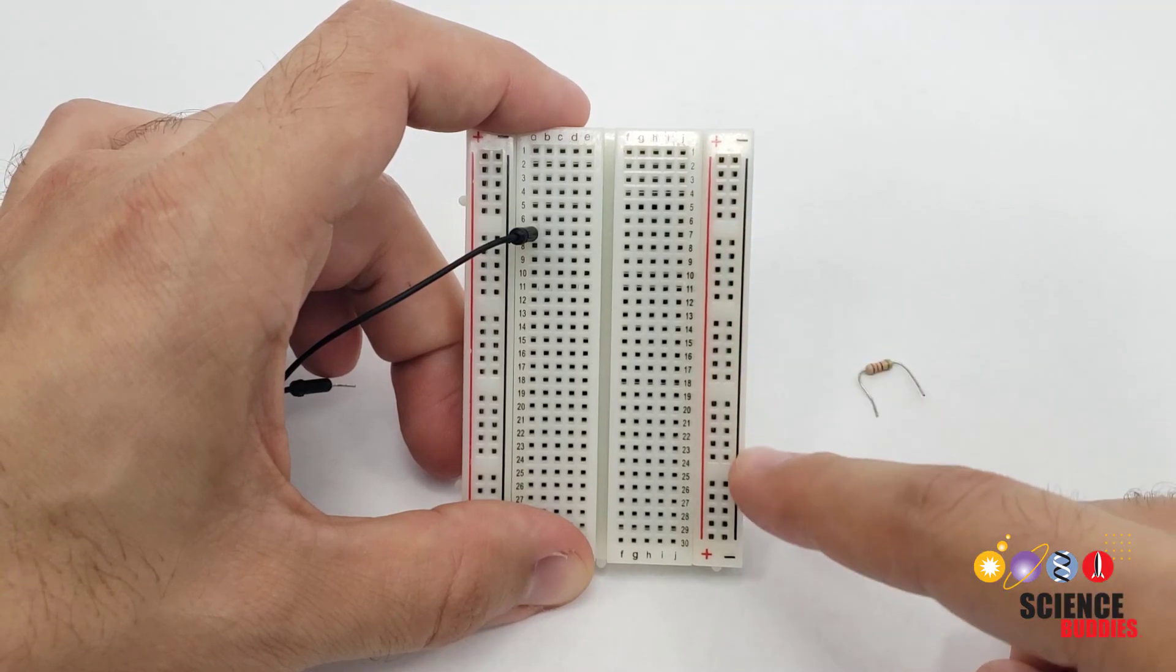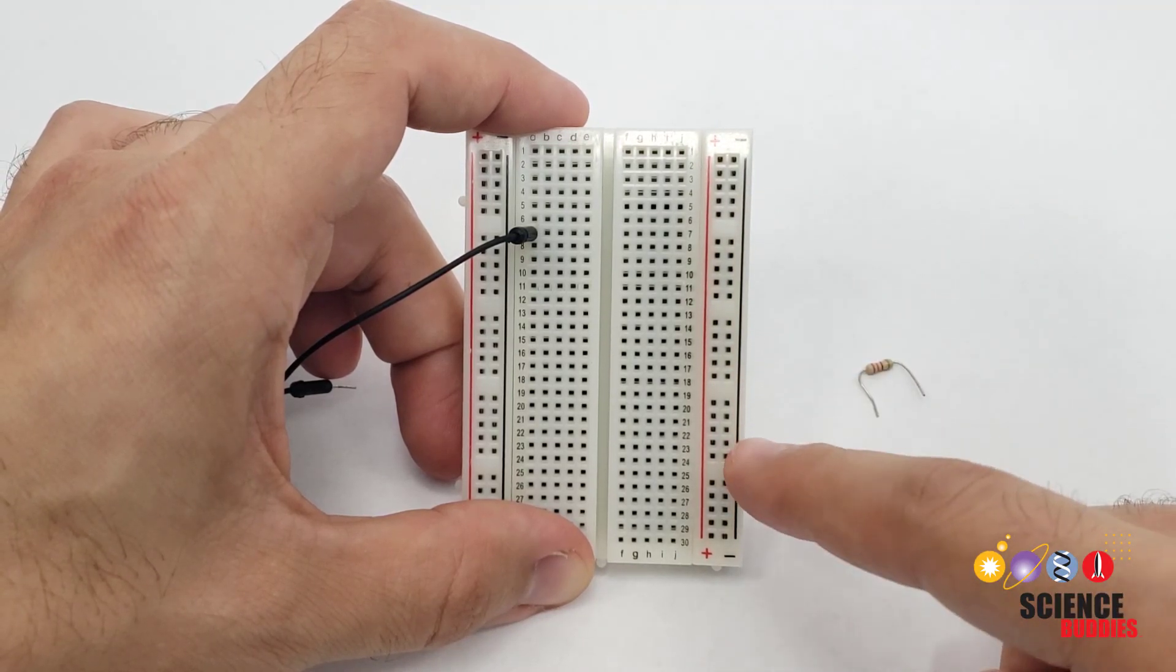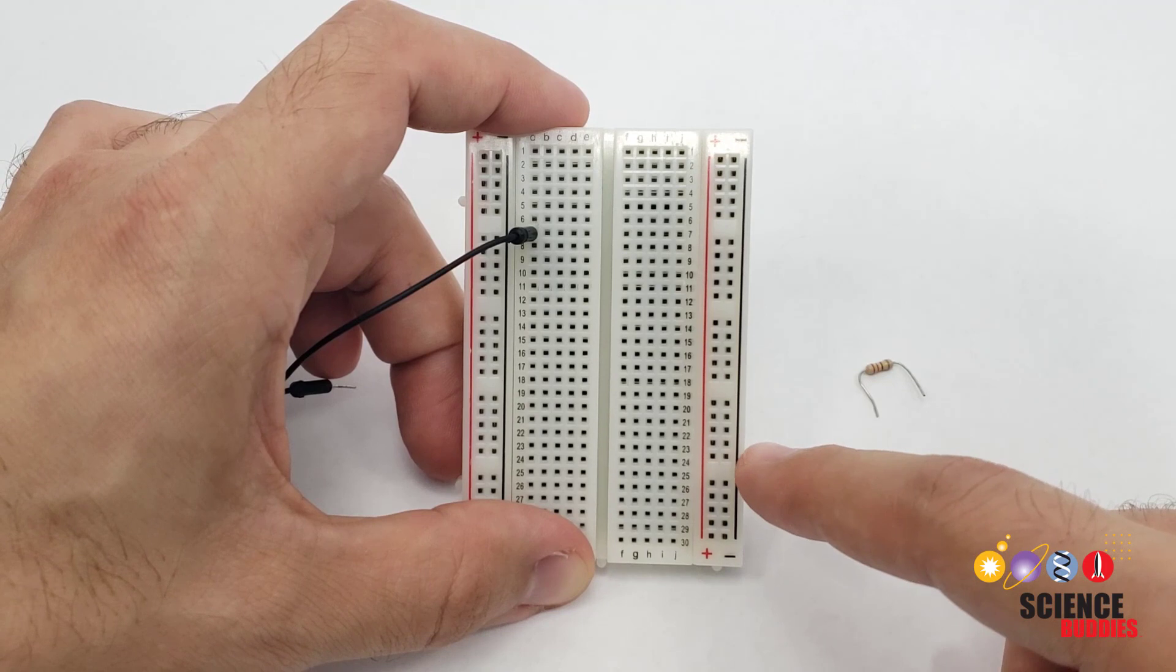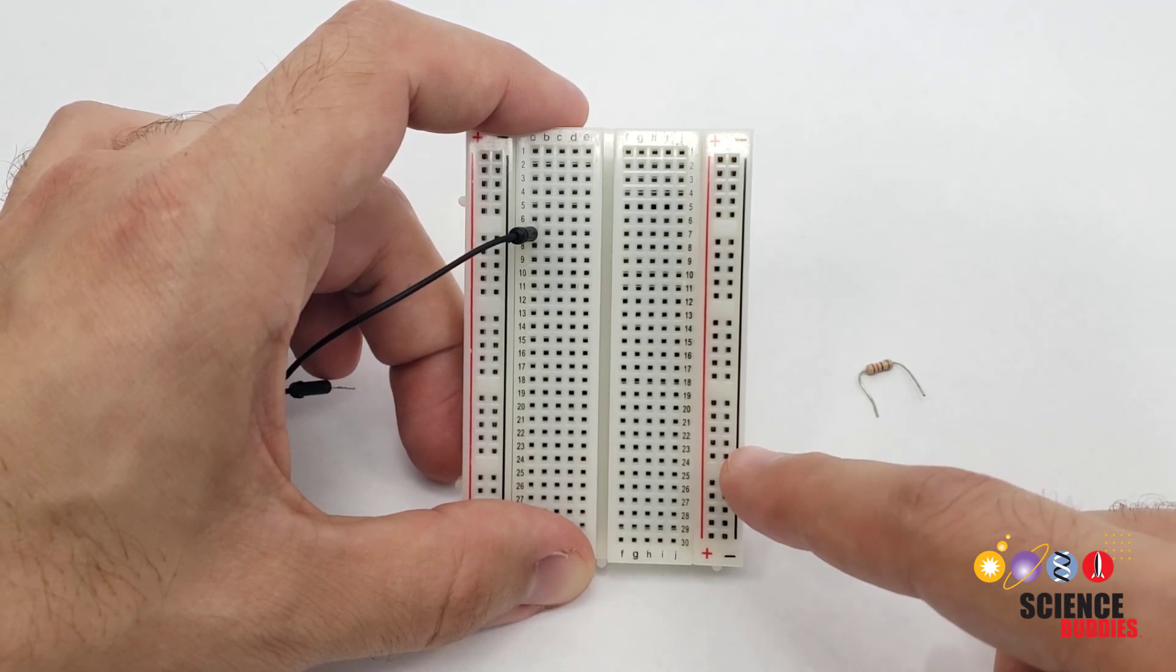The long vertical strips on the sides of the breadboard are called buses or rails and they're connected a little differently, but we're not going to worry about them just yet.